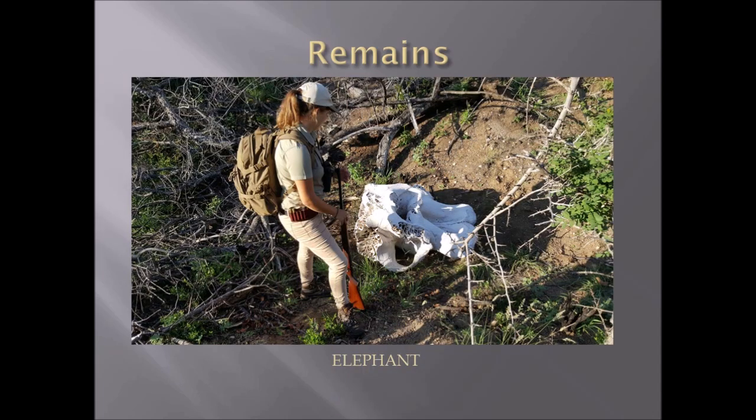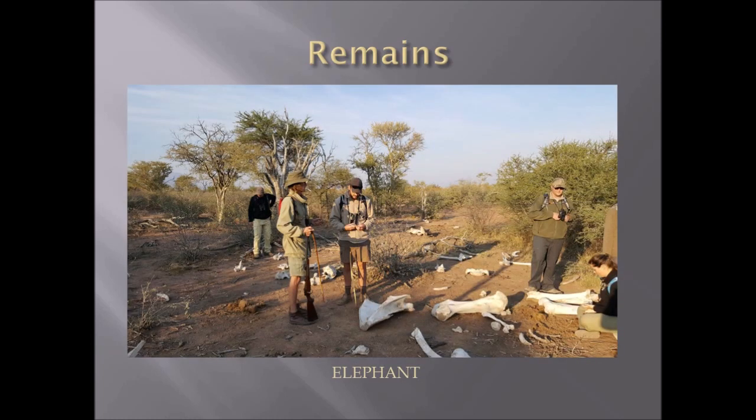Here we have elephant remains. Notice the honeycombed skull structure, which helps to cool the immense animal down. You can also see the other remains of the elephant carcass — the large bones making up the upper humerus, hip bones, ribs, and so on.